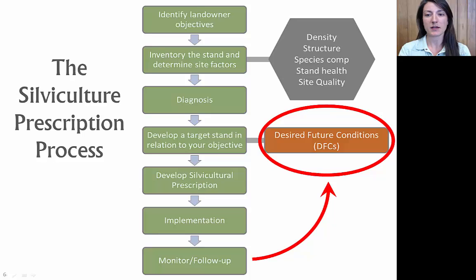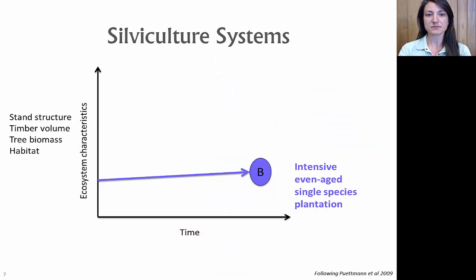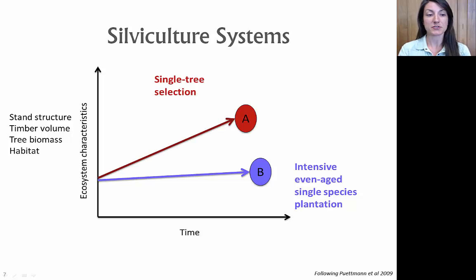One opportunity for incorporating climate considerations into management is to take a closer look at how desired future conditions, or DFCs, are articulated and defined. DFCs usually stipulate what ecosystem characteristics should be met by a certain time frame, typically a rotation. An intensively managed plantation maintained within a very narrow range of structural and compositional development goals has limited resilience because there's little diversity and limited adaptive capacity. Similarly, a single tree selection system may have somewhat greater complexity but is still maintained within a narrow range of development and has limited adaptive capacity.